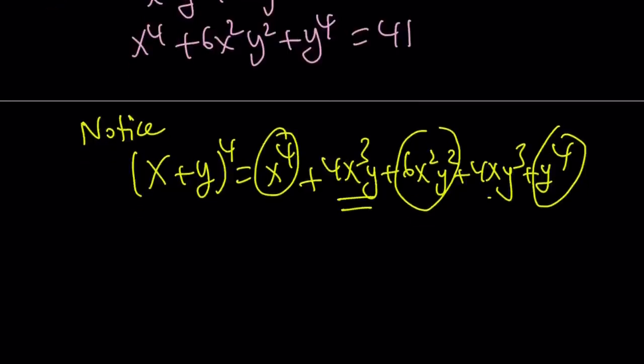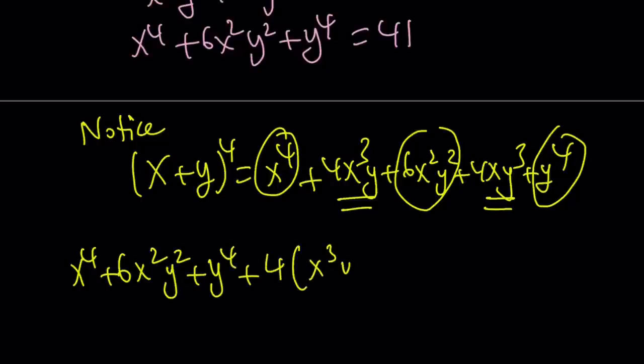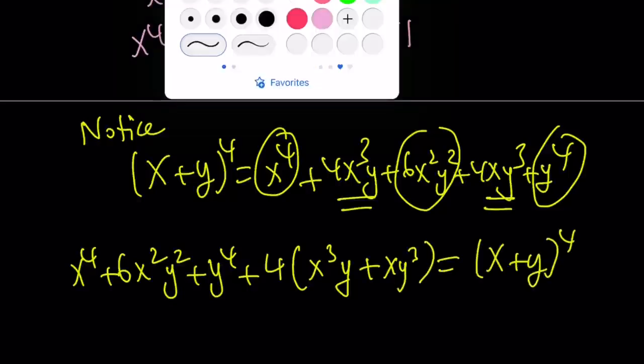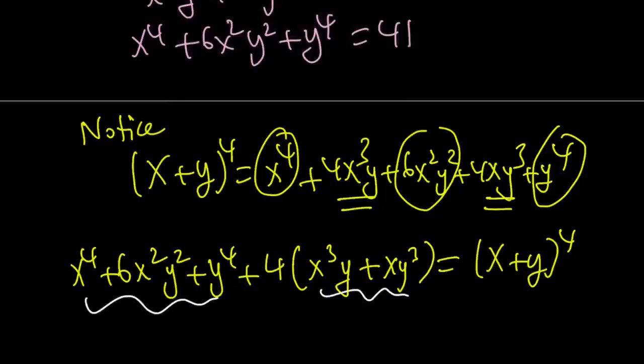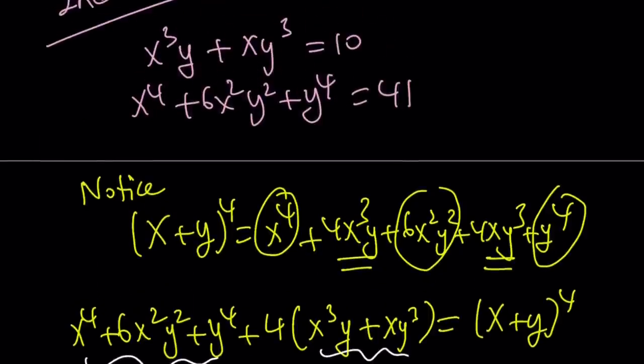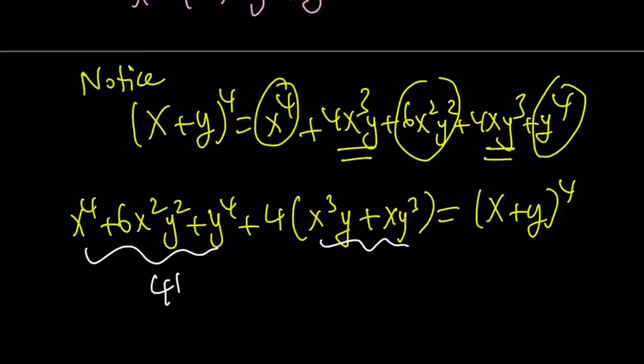So we notice that these two terms appear with a coefficient of 4, but that can be easily taken care of. So what am I trying to say? This is what I'm trying to say. We know the value of x⁴ + 6x²y² + y⁴. And then we can take out a 4 here and write this as 4(x³y + xy³). Now remember, this is (x+y)⁴, but we do know the value of this and that. So we can substitute.